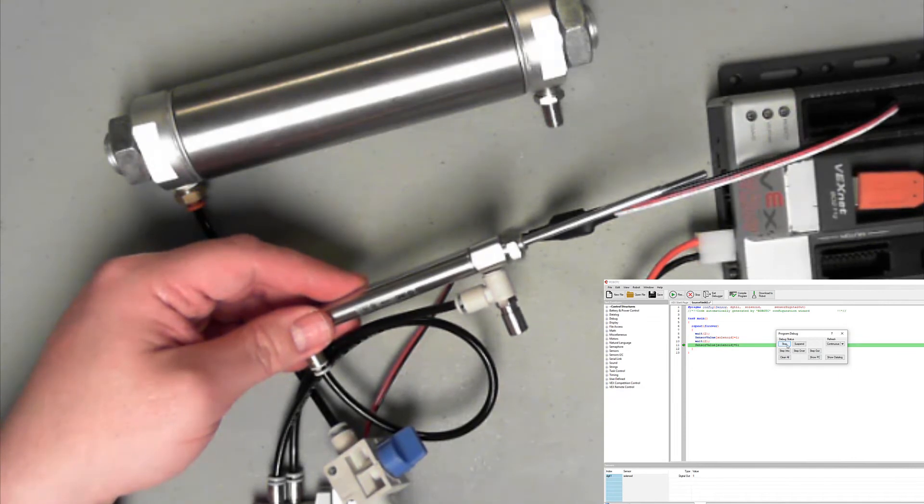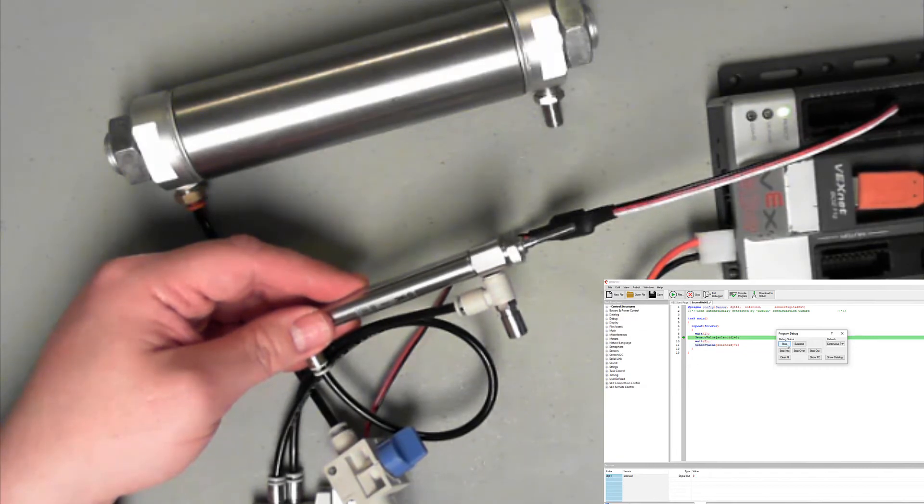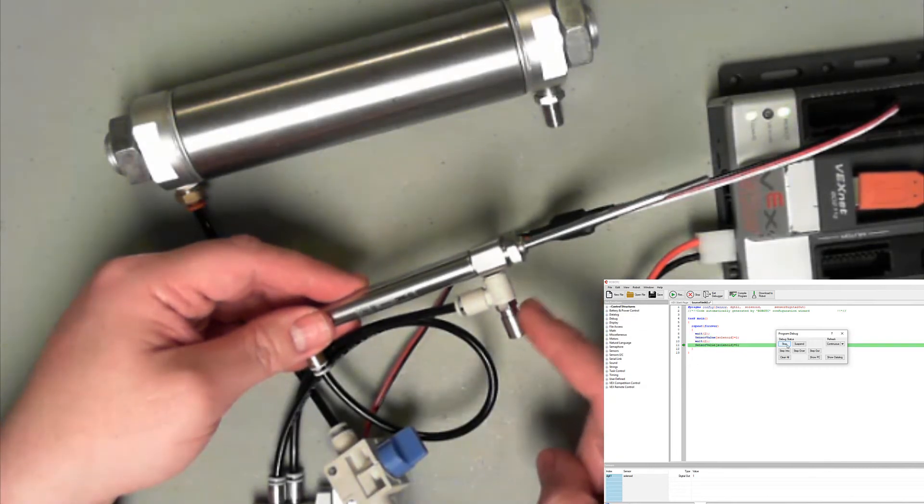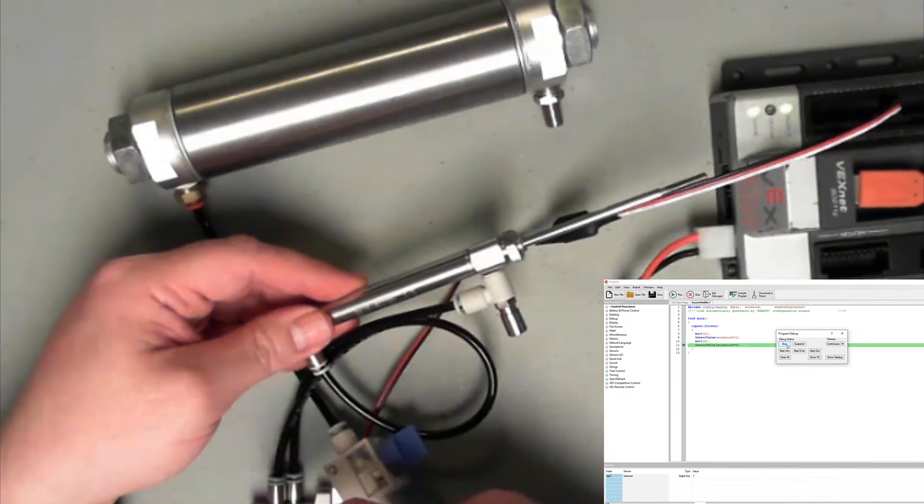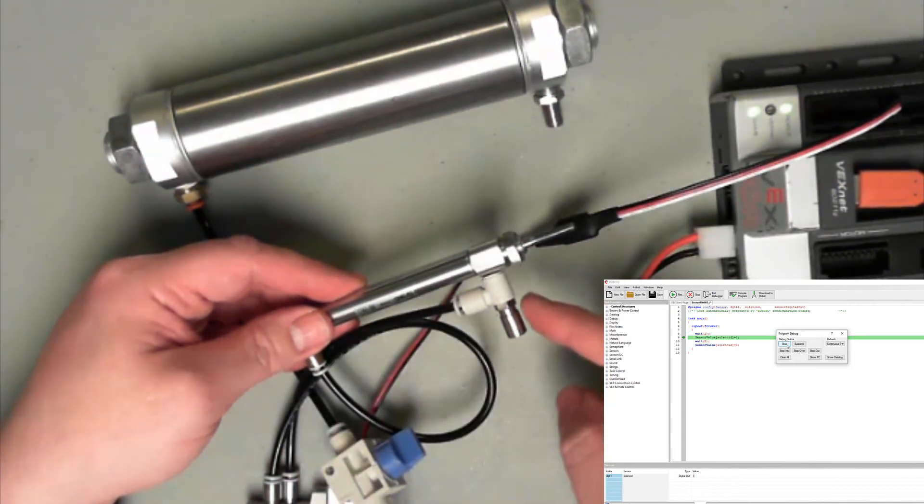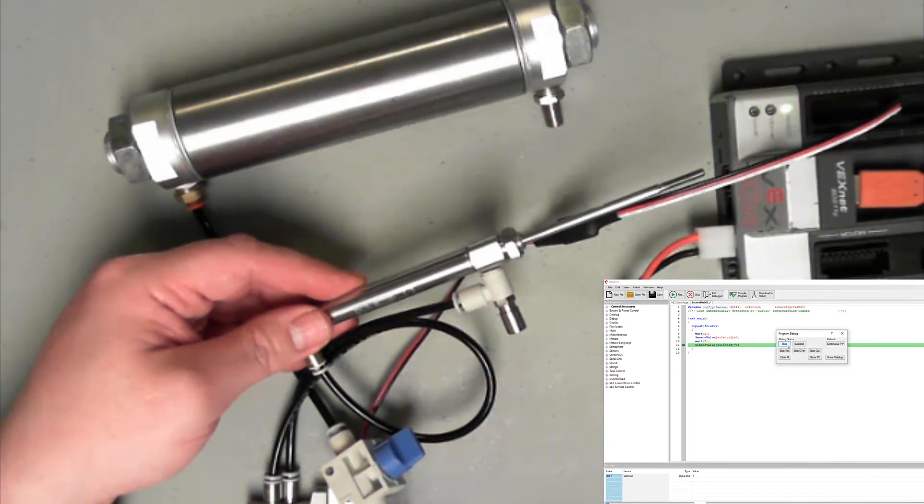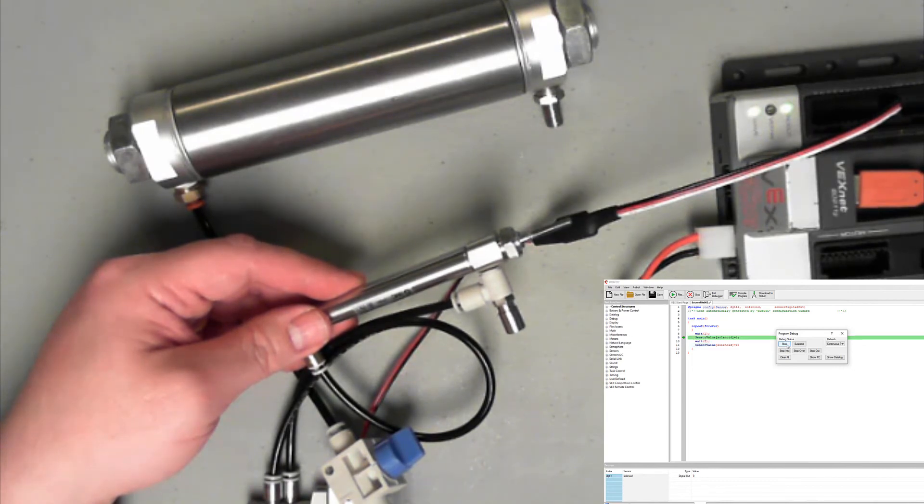And again, the question is, why is it retracting so fast but sending out so slow? Remember, it has to do with the speed control that's on the end here. So being able to send it in is going fast. Being able to send it back has to do with how it's allowing you to come back through here. So I can send out and it's still going to get out the same amount of pressure. And then it's going to retract back faster.